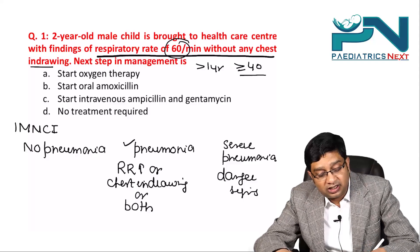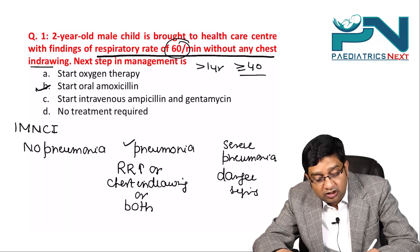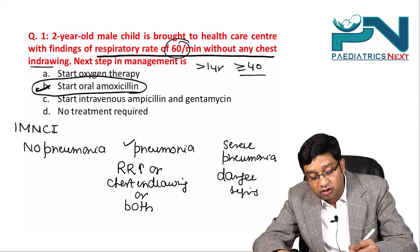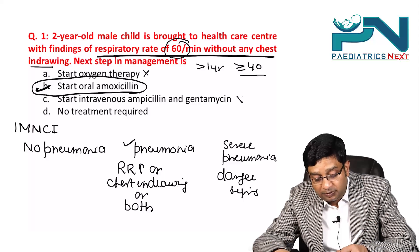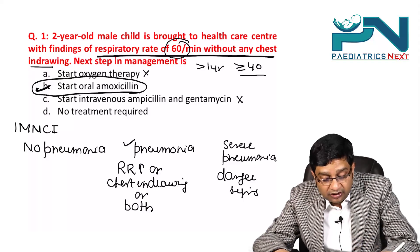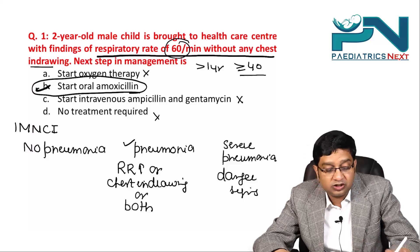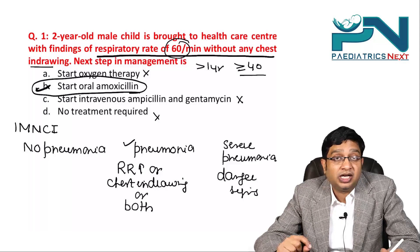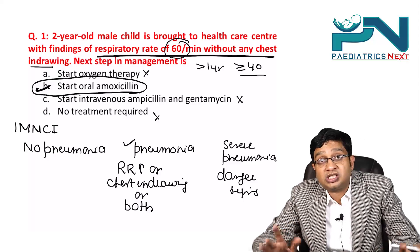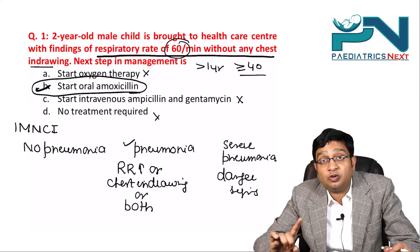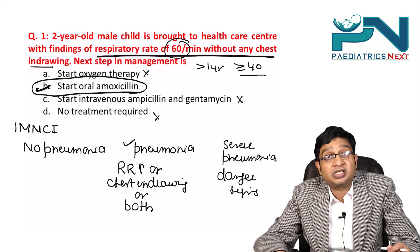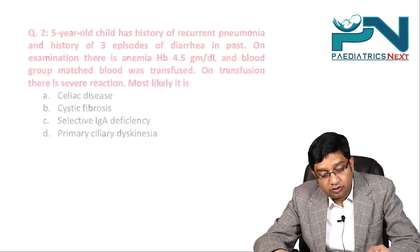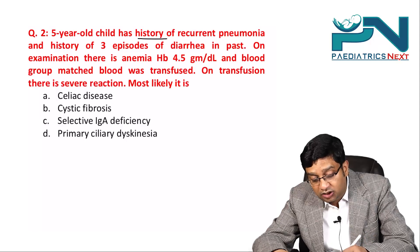If classified as pneumonia, you start oral amoxicillin. Oxygen therapy is not required. Ampicillin plus gentamicin are given in severe pneumonia; no treatment for no pneumonia. Note: if the examiner gives a case with only chest indrawing present, it is still classified as pneumonia and the answer is oral amoxicillin.